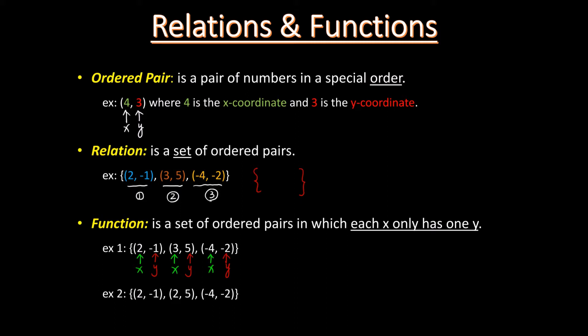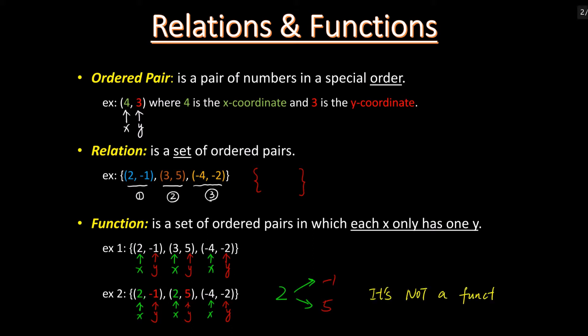Let's do the same thing for the second example. Label the x-coordinate and y-coordinate. Here we can see 2 maps to negative 1, and 2 maps to 5. Wait a minute — the x-coordinate 2 has two y-coordinates, negative 1 and 5. This is not allowed in a function, so it's not a function.